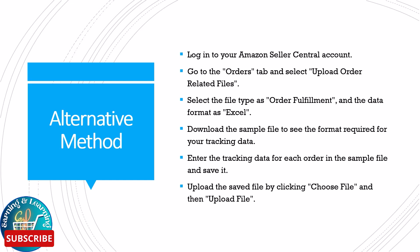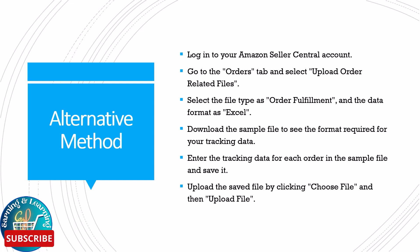Log in to your Amazon Seller Central account. Go to the Orders tab and select Upload Order Related Files. Select the file type as Order Fulfillment and the data format as Excel. Download the sample file to see the format required for your tracking data. Enter the tracking data for each order in the sample file and save it. Upload the saved file by clicking Choose File and then Upload File.